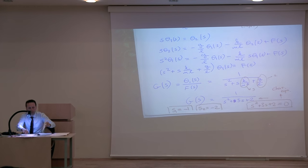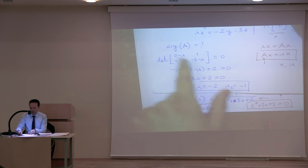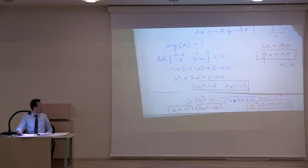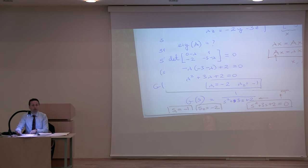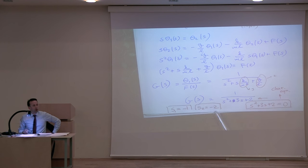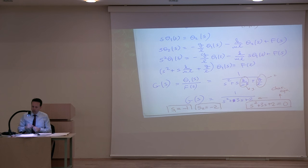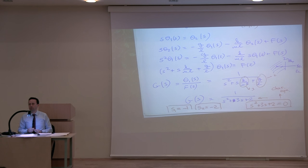The eigenvalues are at the same time the roots of the characteristic equation, for a linear system. So finding the eigenvalues of the A matrix is equivalent to finding the roots of the characteristic equation. We plot them in the complex plane: −1 is here, −2 is here, and we immediately say the equilibrium point is stable. That's exactly what we do in system dynamics.